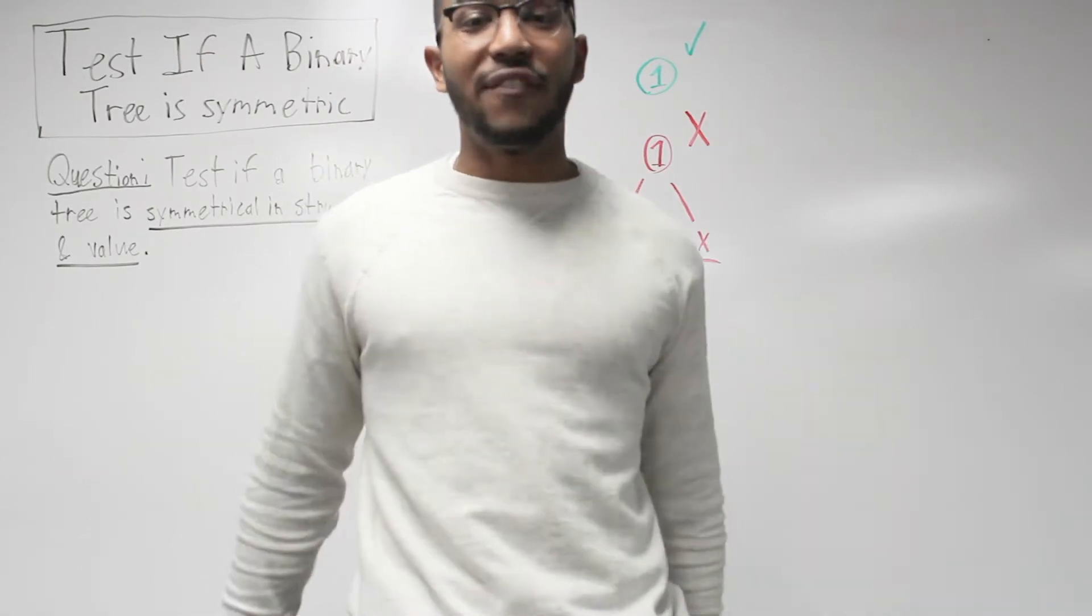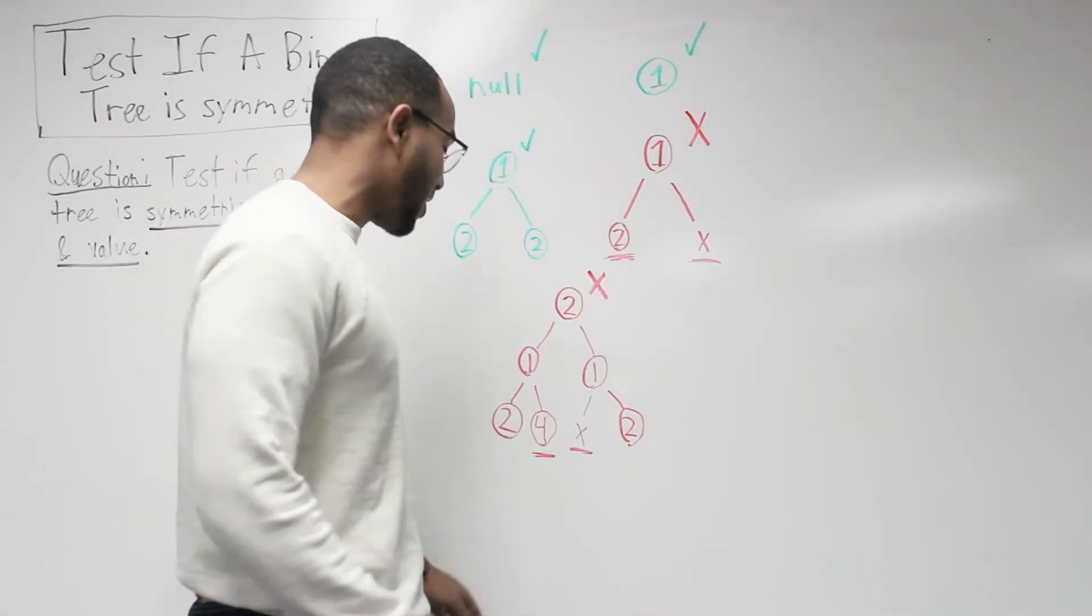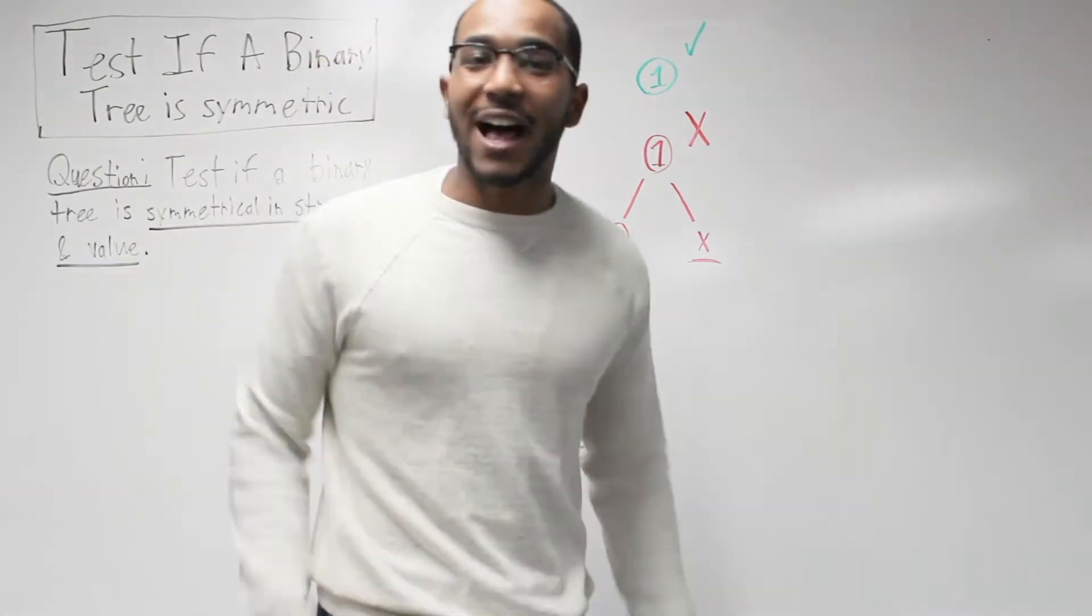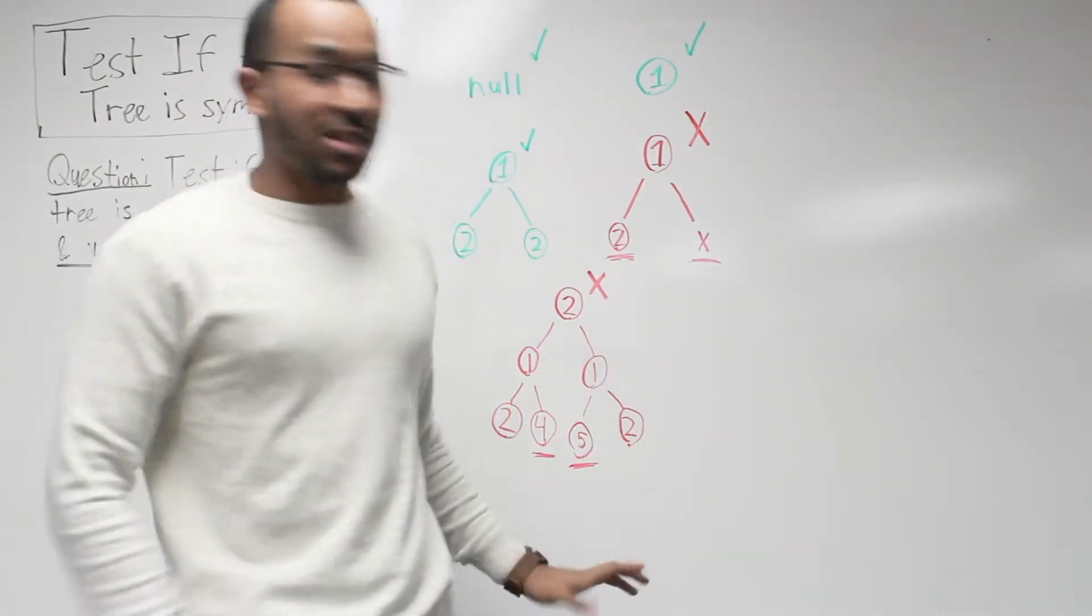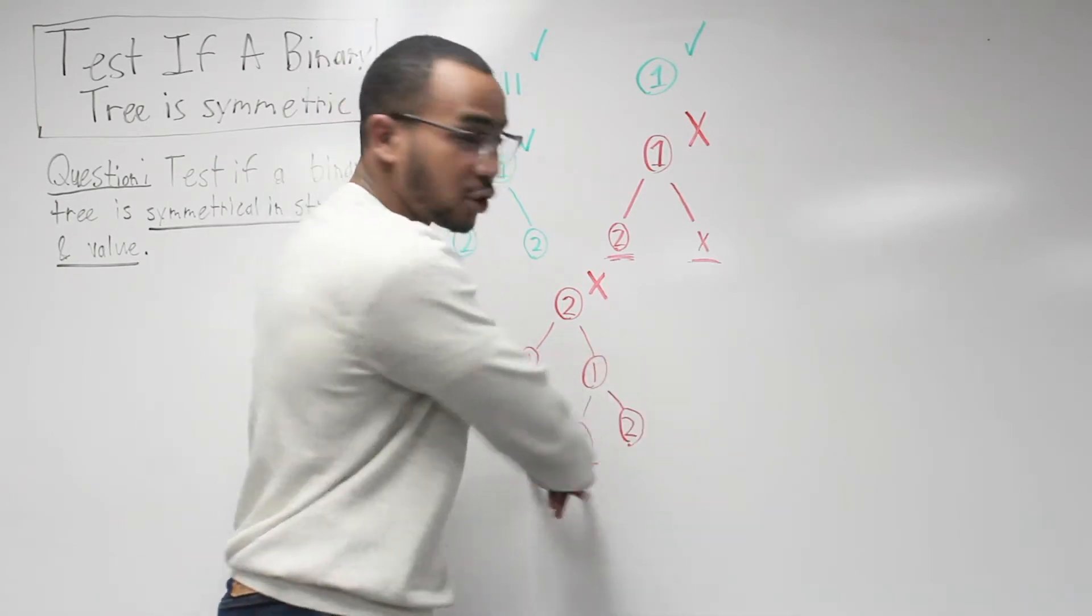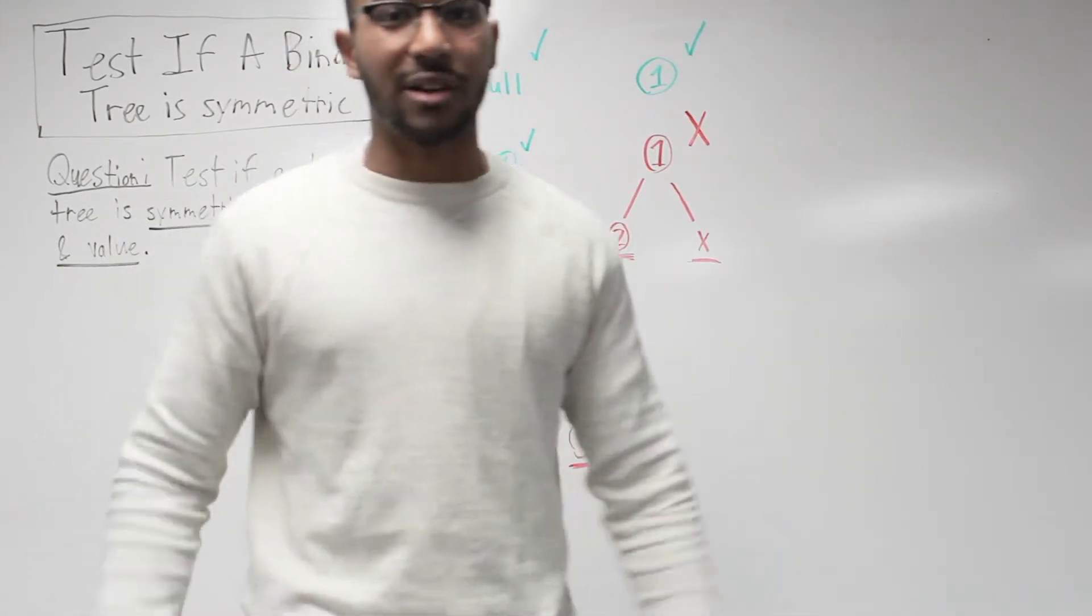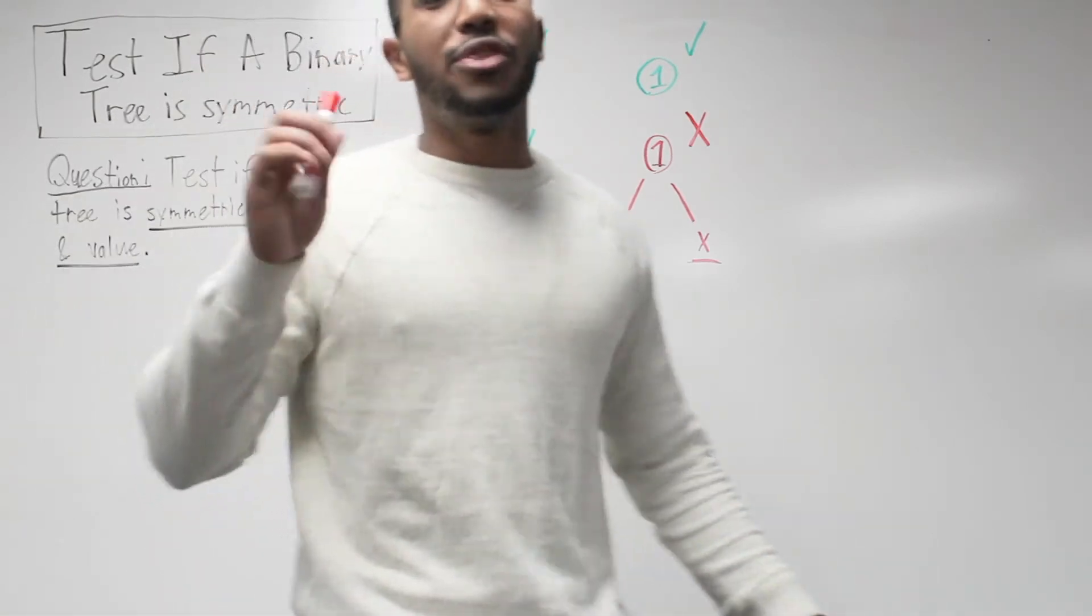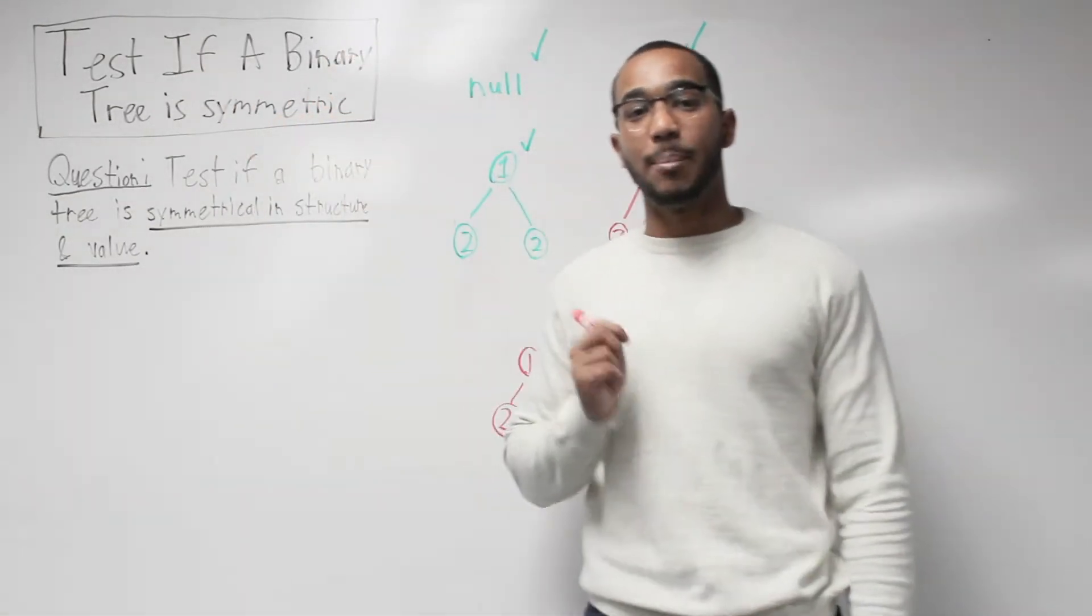If we draw a line, everything will fold over and work except for the four and the null right there. Those will not match. Four does not equal null. They're structurally different. This is not even a value difference. We could put a five there and it still fails. These are the two values that would fold on to each other and they need to be the same.